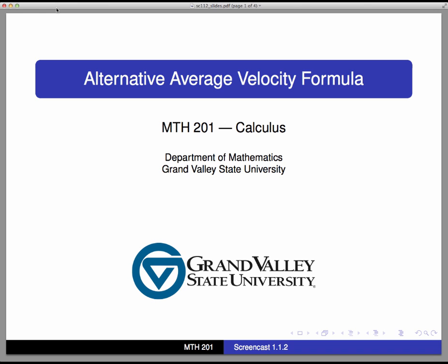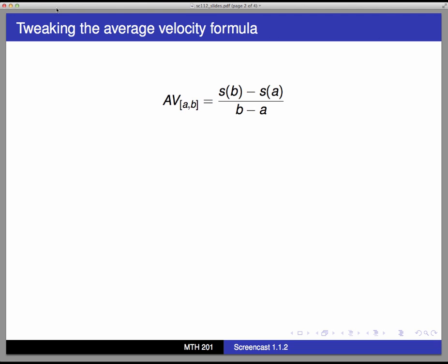So we know that the average velocity of a moving object on a time interval that starts at t equals a and ends at t equals b is given by this formula. That's s of b minus s of a divided by b minus a, where s here is a function of time that tells the position of the object at time t. So the numerator is the difference in positions, which tells how far the object has traveled. And the denominator is the difference in time values.